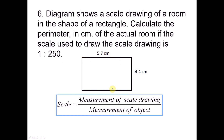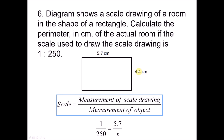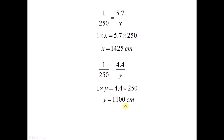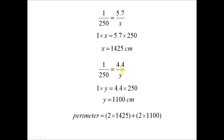Using the formula for the first side: scale is 1/250, measurement of scale drawing is 5.7, measurement of object is x. Cross-multiplying gives x = 250 × 5.7 = 1425. For the second side, measurement of scale drawing is 4.4, giving y = 250 × 4.4 = 1100. The perimeter is 2(1425) + 2(1100) = 5050 cm.